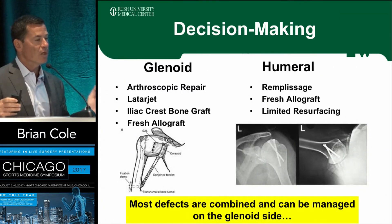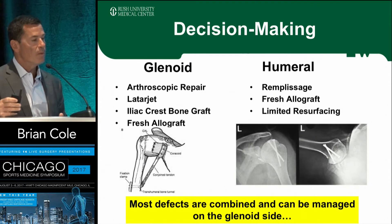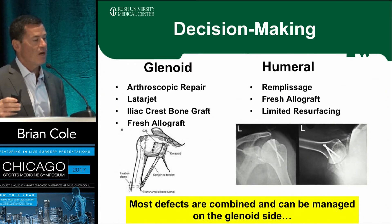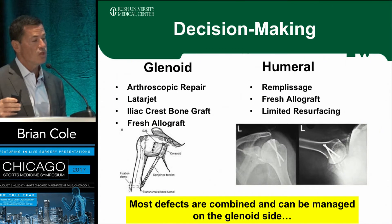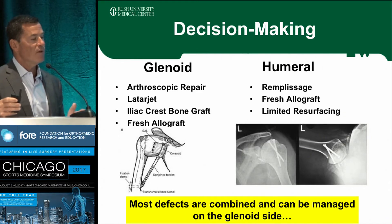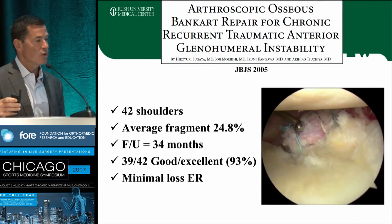The decision-making when considering glenoid versus humeral treatment: the options on the glenoid side are arthroscopic repair, Latarjet, iliac crest, and fresh allograft. On the humeral side, it's remplissage, fresh allograft in extreme situations, and some type of limiting resurfacing operation like a metal inset implant. Most of these defects are combined and can, in fact, be managed with glenoid-based treatment.